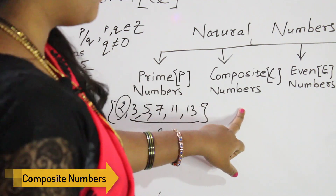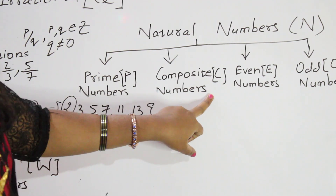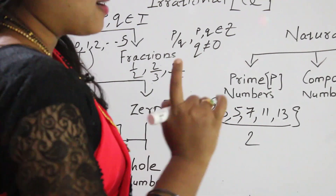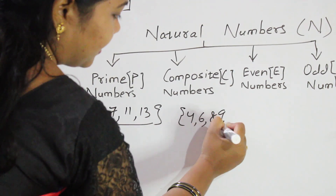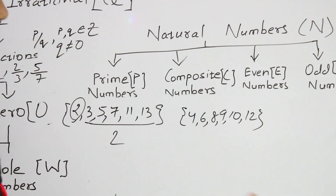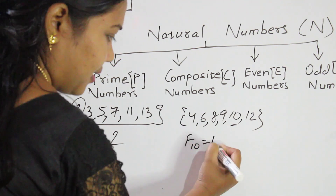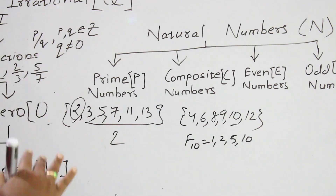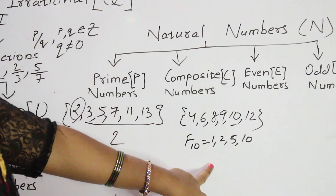Next we come to composite numbers. Composite numbers are denoted by capital C. A number which has more than 2 factors — that is at least 3 factors — is known as a composite number. Examples: 4, 6, 8, 9, 10, 12. All these numbers have more than 2 factors. For example, the factors of 10 are 1, 2, 5, and 10 — that is 4 factors. 10 appears in the 1, 2, 5, and 10 tables. So a number having more than 2 factors is a composite number.